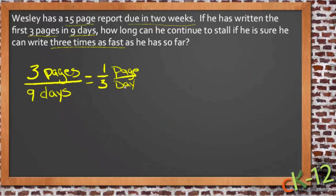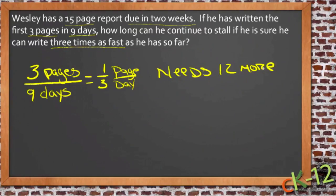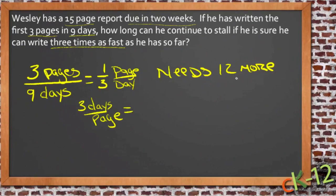If he were to continue at that rate, he has three pages done out of his 15, so he needs 12 more pages. If he continues at a third of a page per day, it takes him three days to write a single page. So at this rate — three days per page — it would take him three times 12, or 36 more days.